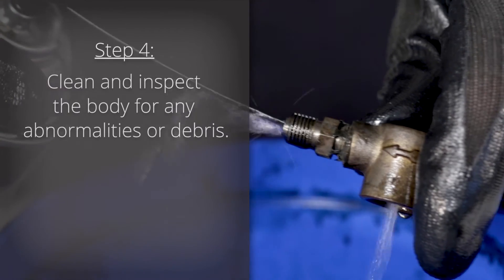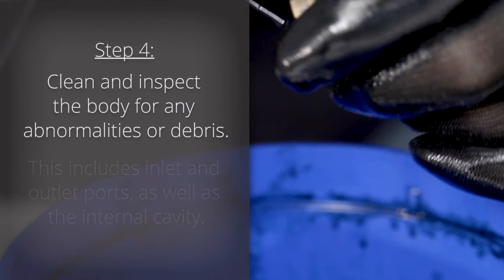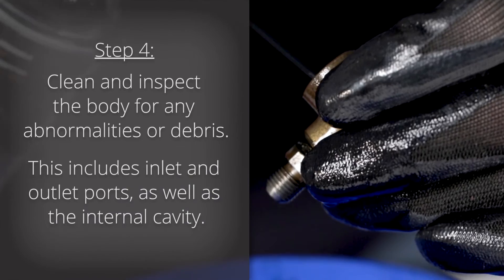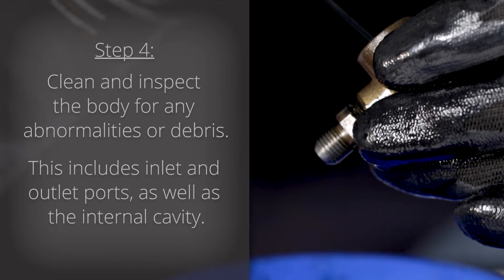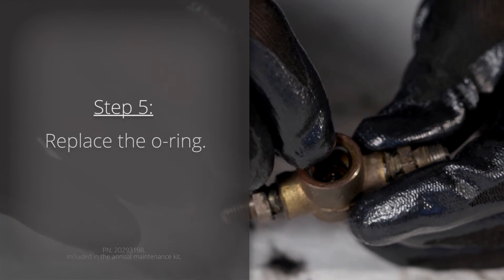Step 4: Clean and inspect the body for any abnormalities or debris. This includes the inlet and outlet ports, as well as the internal cavity. Step 5: Replace the o-ring.